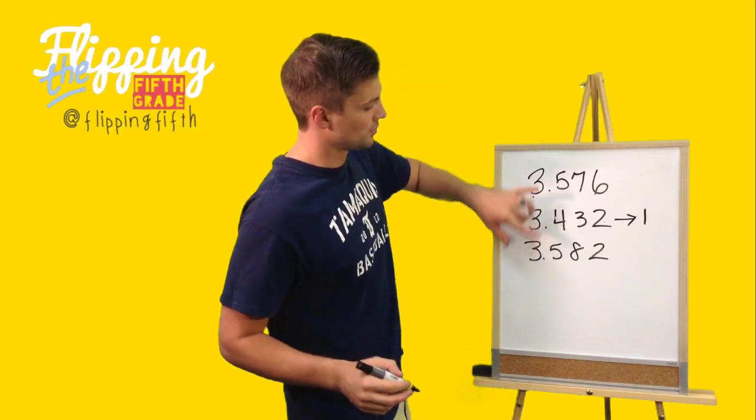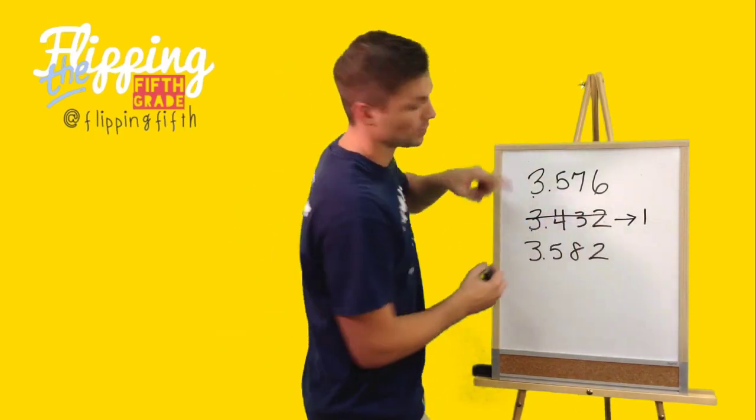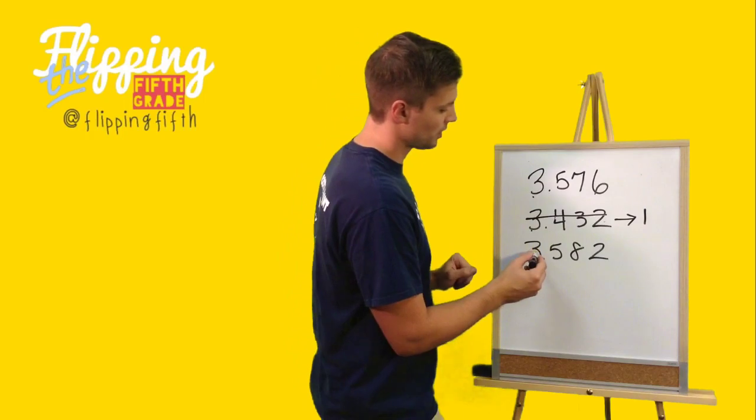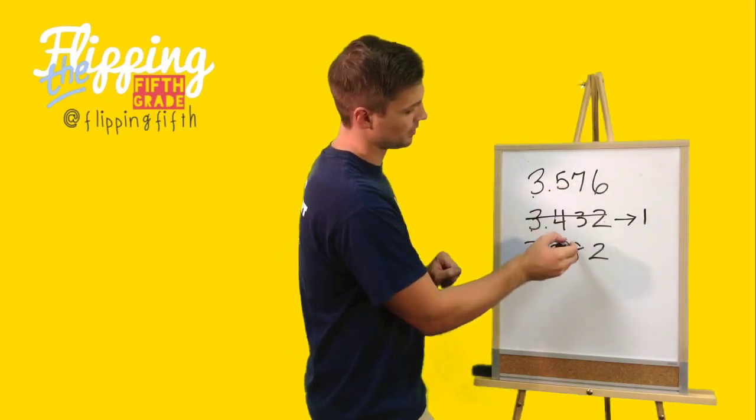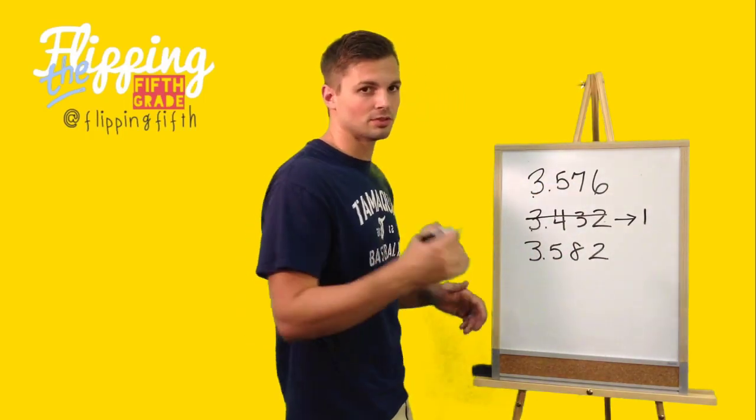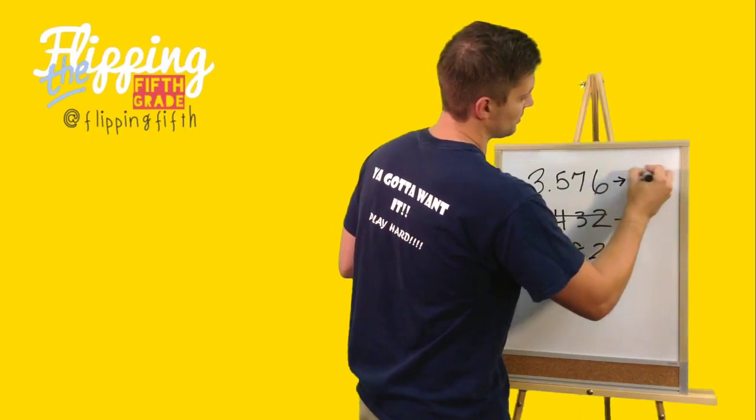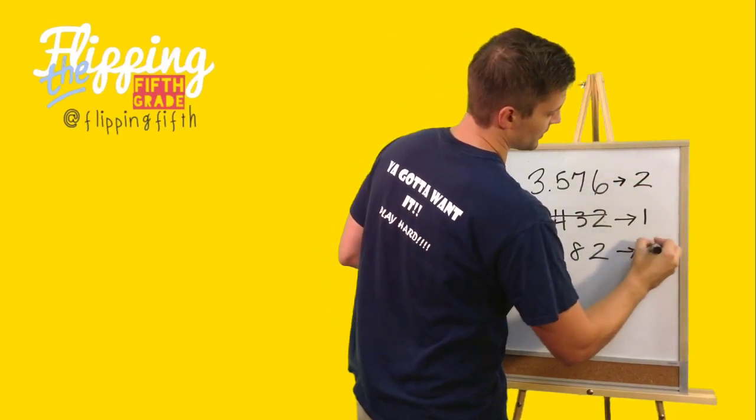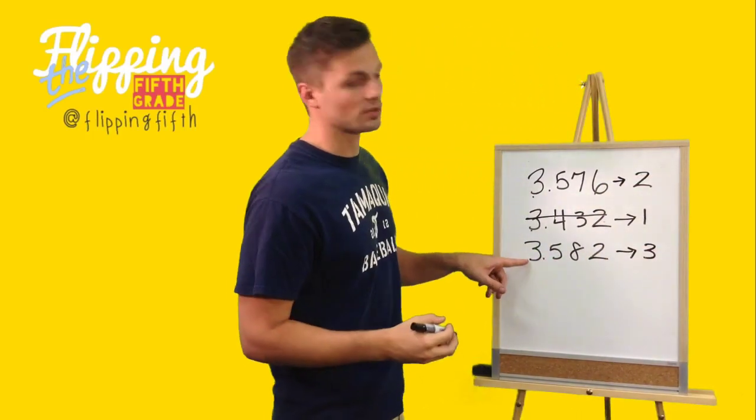We go to the next. We're down to these two. You can cross that off if that helps you. And we have an eight and a seven. We know that the seven is a little bit smaller, so this will go second. And finally, the last one is the largest one.